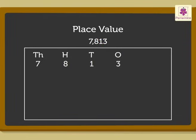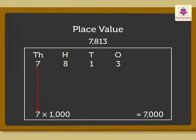Now, let us have a look at the place value of each digit. As the 7 is in the thousands column, it means that there are 7 thousands and so its place value is 7 into 1000, that is 7000. As the 8 is in the hundreds column, it means that there are 8 hundreds and so its place value is 8 into 100, that is 800.